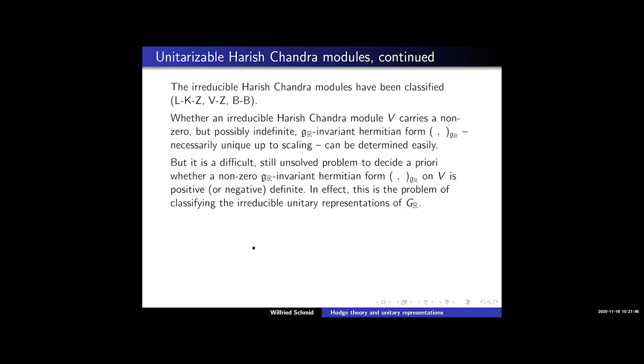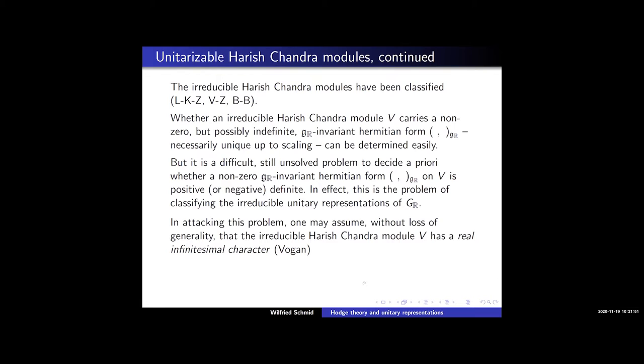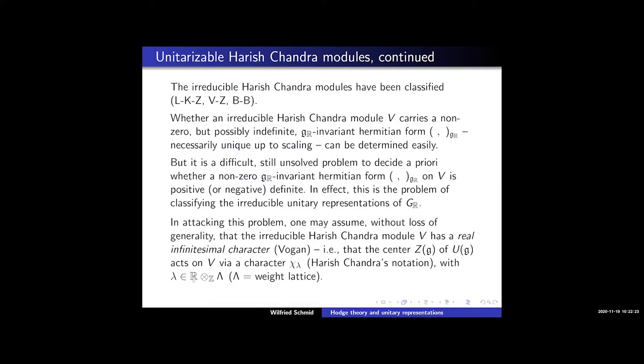So back to the problem of describing irreducible unitary representations. One can assume without loss of generality that the irreducible Harish-Chandra module under consideration has a real infinitesimal character — an observation of Hogan — meaning that the center of the universal enveloping algebra acts via a character χ_λ, in Harish-Chandra's notation, which lies in the real linear span of the weight lattice. There are other unitarizable Harish-Chandra modules, but those are easily described, so the problem really comes down to those which have, in this sense, a real infinitesimal character.